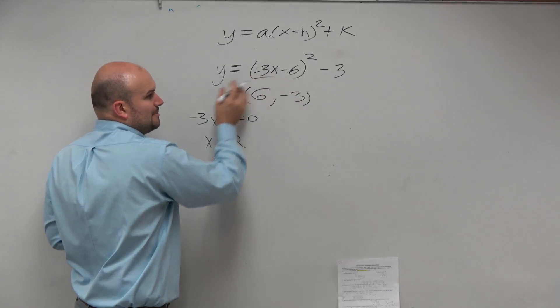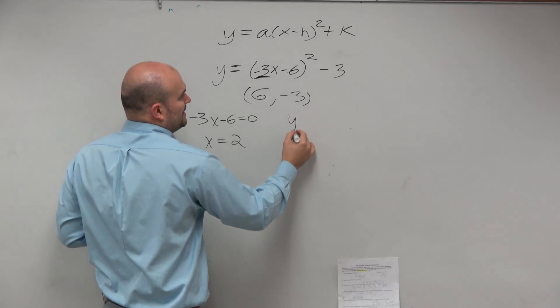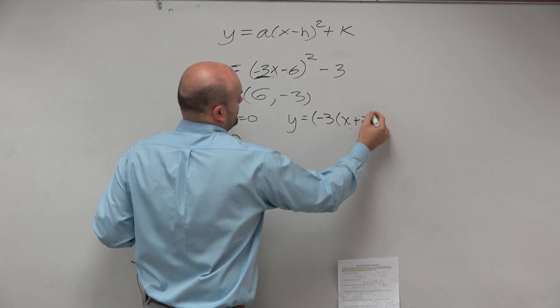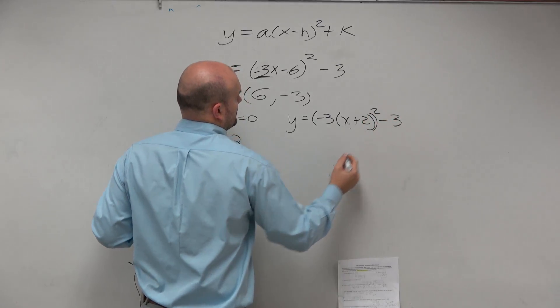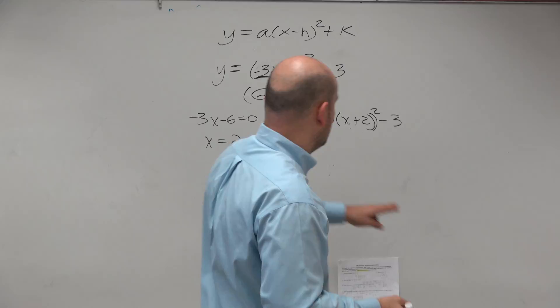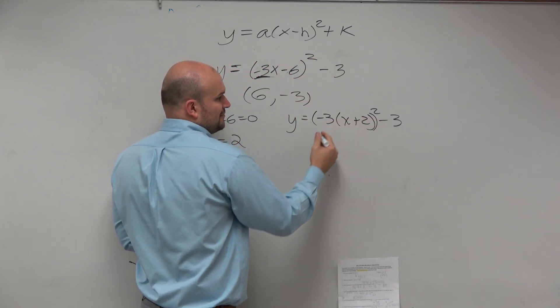The other way we can represent this is just to factor out B. So if we factored out B, it would look something like this. All right? Now, what this represents, what this means, if I look at the transformations now, my transformations is actually left 2, down 3.